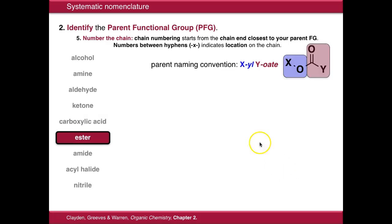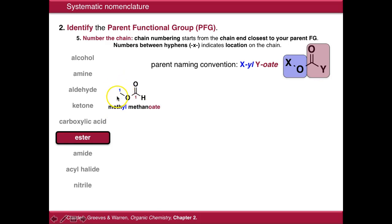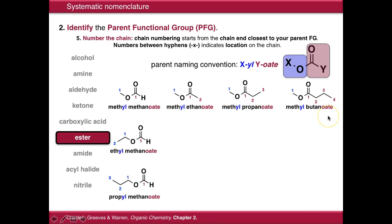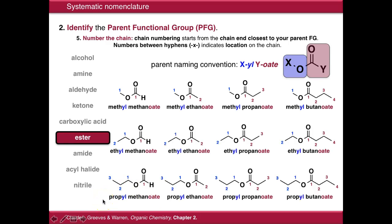Esters are slightly more complicated. In this case we have the naming convention X-yl Y-oate. If we consider them as being derived from an alcohol and a carboxylic acid, then the alcohol portion becomes -yl and the carboxylic acid portion becomes -oate. So here's an example: methyl methanoate, because we have one carbon on the alcohol side and one carbon on the carboxylic acid side. If we move to higher numbers of carbons on the carboxylic acid side, it moves from methyl methanoate to methyl ethanoate, methyl propanoate, methyl butanoate. Likewise, increasing the alcohol chain gives ethyl methanoate, then propyl methanoate, and so on.